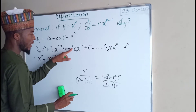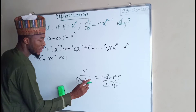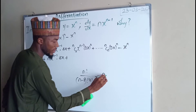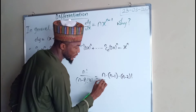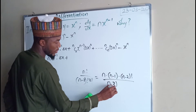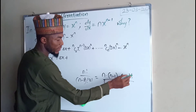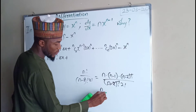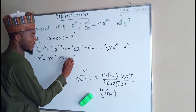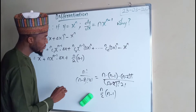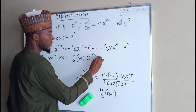For nC2, we have n factorial over (n minus 2) factorial times 2 factorial. This expands to n times (n minus 1) times (n minus 2) factorial, divided by (n minus 2) factorial times 2. The (n minus 2) factorials cancel, and 2 factorial is 2, so we get n over 2 times (n minus 1). The full third term is therefore n(n−1)/2 times x to the power n minus 2, times dx squared.